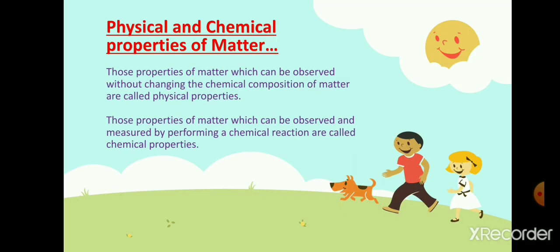Now we will learn about the physical and chemical properties of matter. The properties such as color, smell, freezing point, boiling point, density, hardness, malleability, ductility, and attraction or repulsion toward a magnet — they all are the physical properties of matter. They can be observed without changing the chemical composition of the matter.